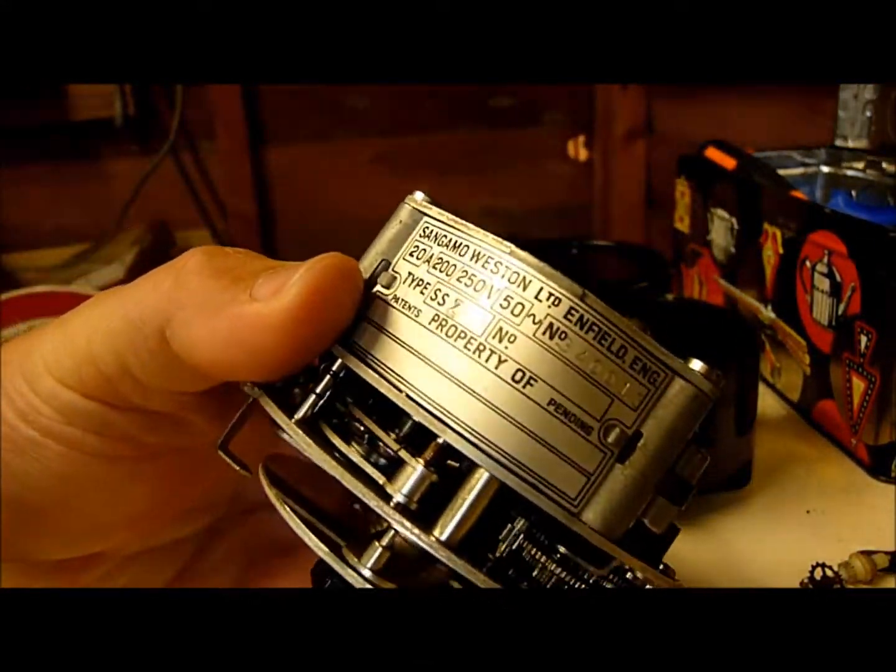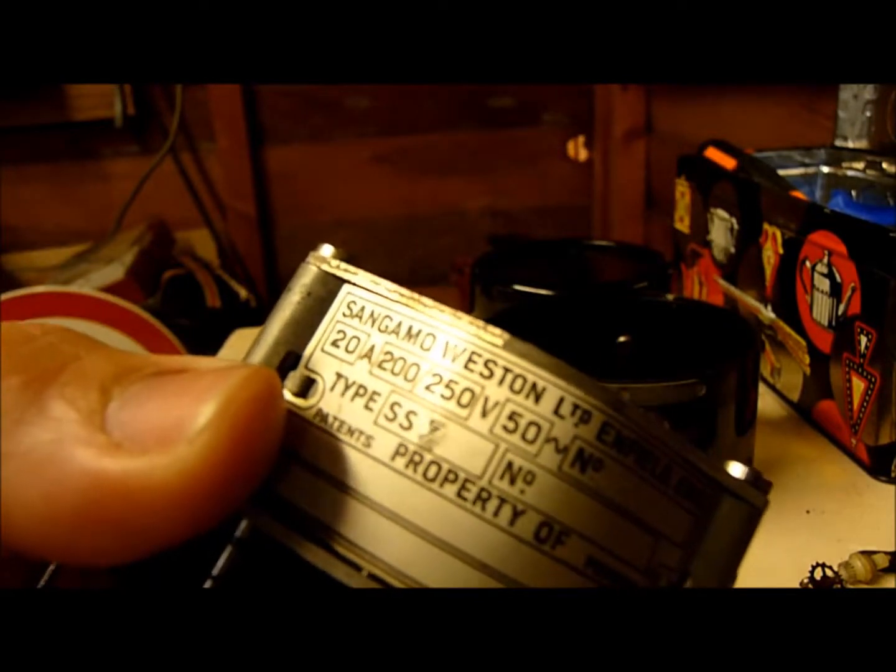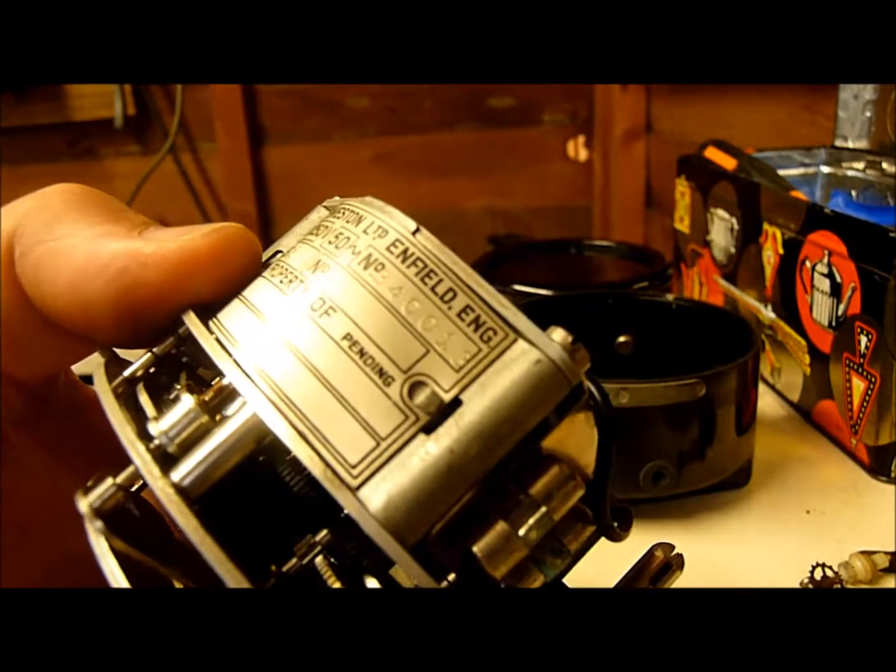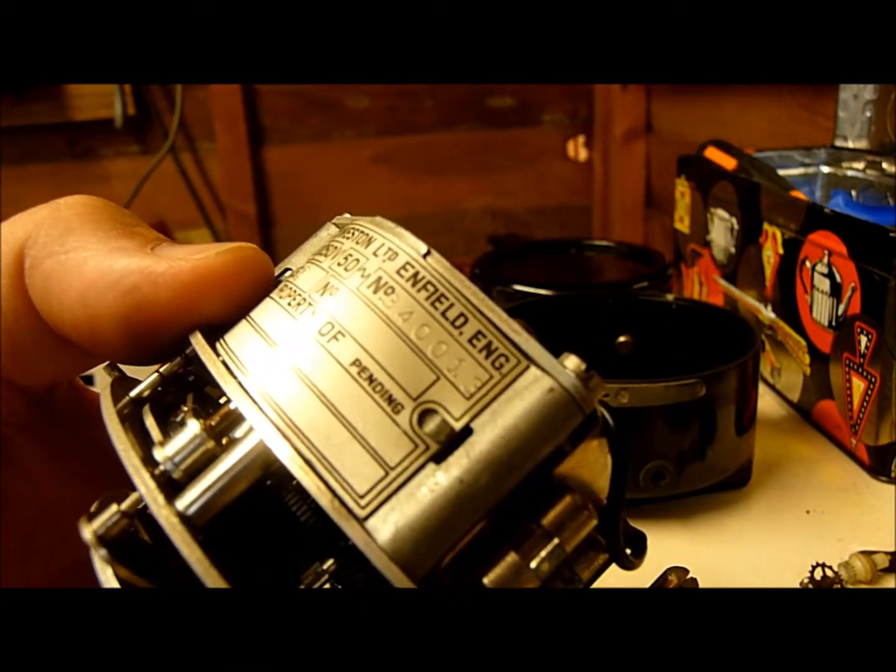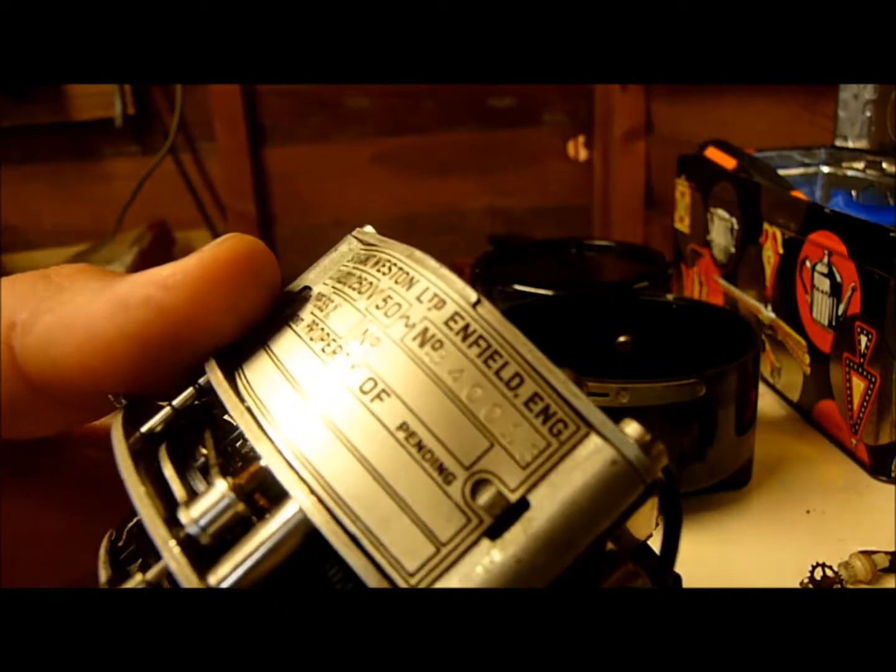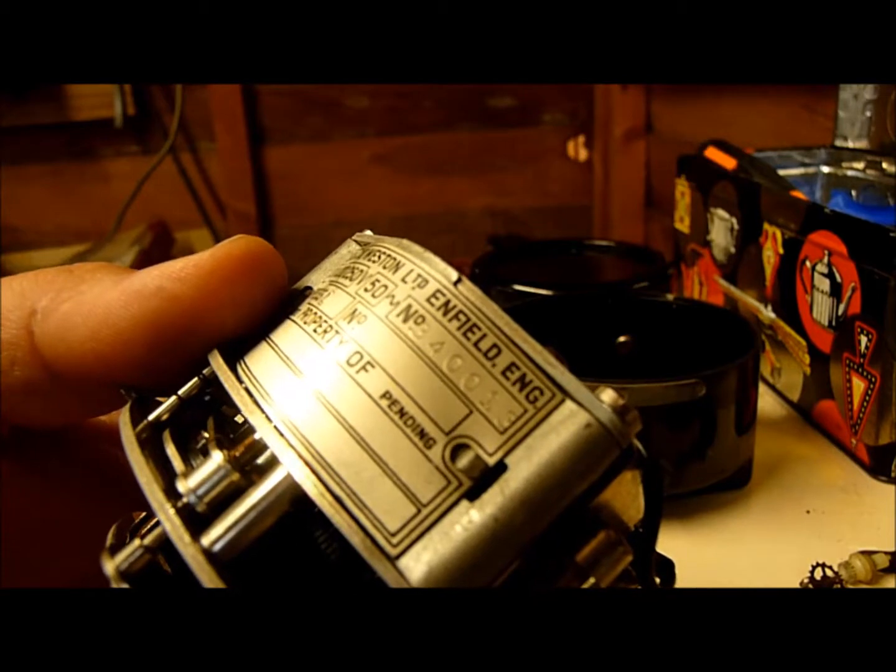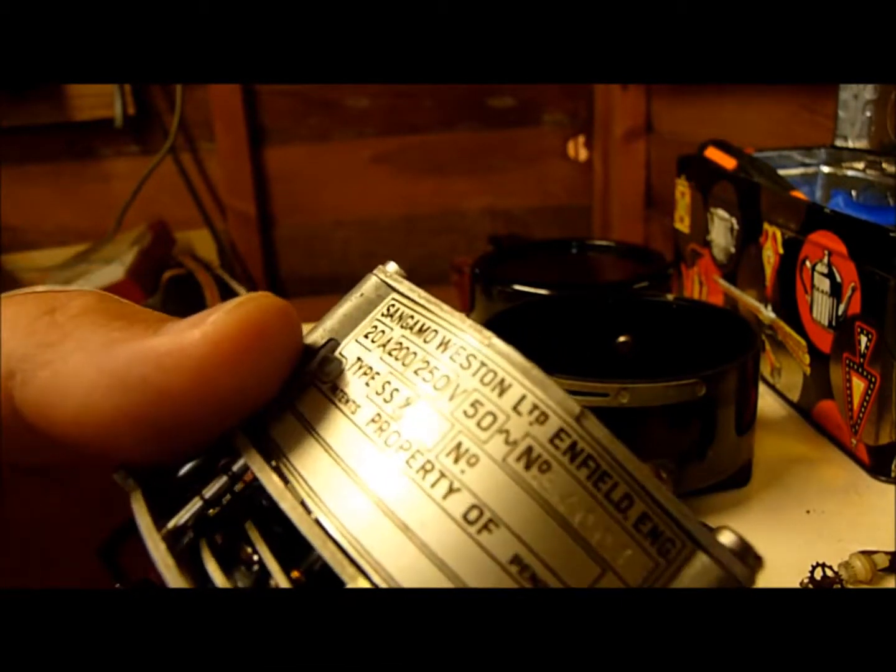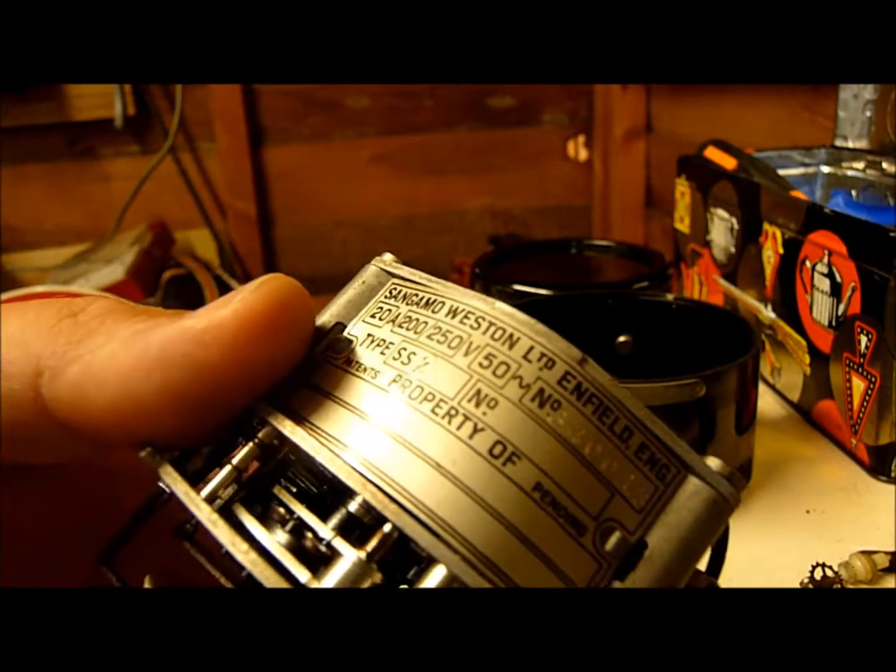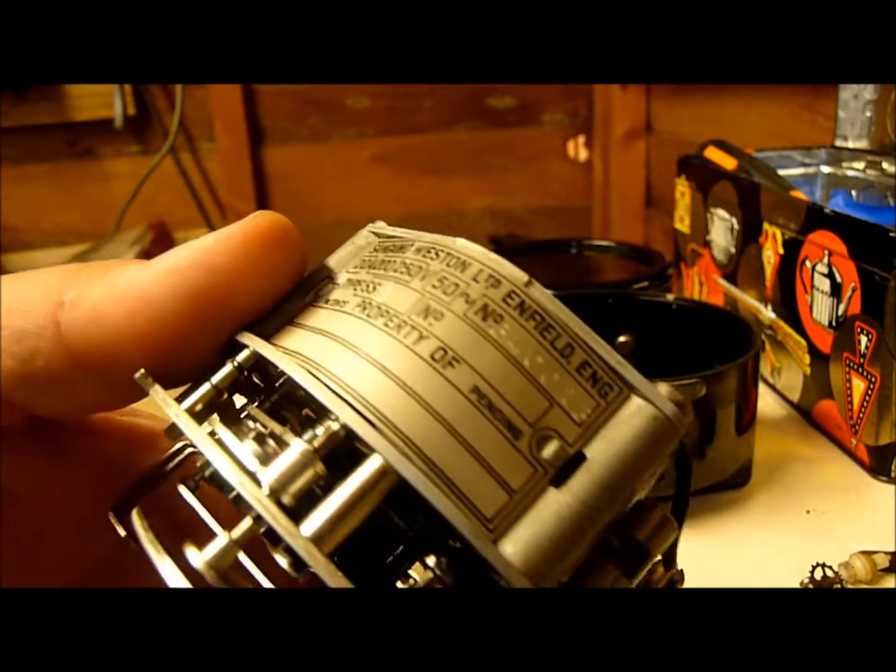Let's have a look at the nameplate here. Sangamo Western Limited, Enfield, England. It's 20 amp, 200 to 250 volts at 50 hertz oscillation frequency. The number it's got here is 3400013. I'm assuming this is the model number, maybe 3-4-0.0.1-3, it's just an assumption. The type is SSZ, whatever that means. There's no number on there, there's no property details on there either.